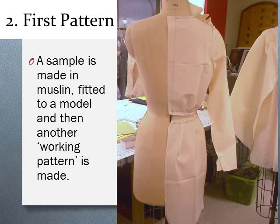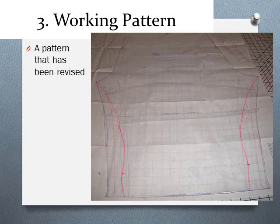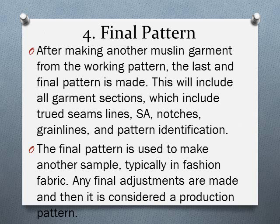After deciding on specific details, they make a muslin from their first pattern — a basic sample fitted to a model representing their target market — incorporating pleats, gathering, and design details. From that, they move to the working pattern, the third stage, where after fitting the first pattern and adding everything they wanted, there are always places to adjust. This is the working pattern phase where you make your revisions and then make another sample to refit before making your final pattern.